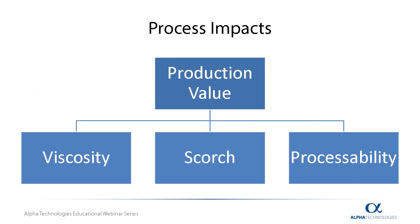Using the multi-speed Mooney, one can quantitatively determine a number of properties of a material with respect to three main categories: viscosity, scorch, and processability, which when controlled properly lead to increased production value. Knowing how your material will behave during a process allows you to determine the ideal operating parameters for critical process functions such as mixing, flow rates, and a number of others. We will now break down how each of these three factors can lead to increased production value and discuss how a multi-speed Mooney can play a pivotal role.